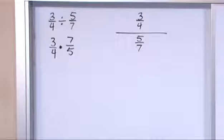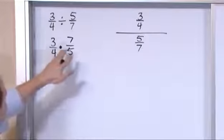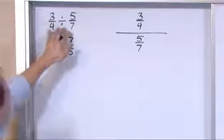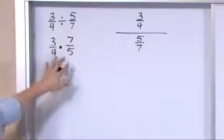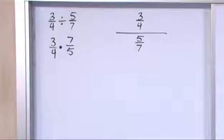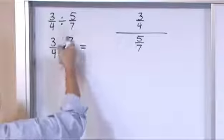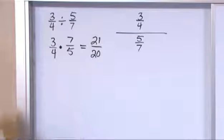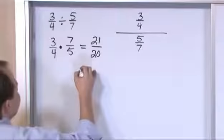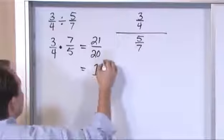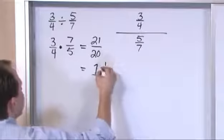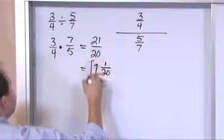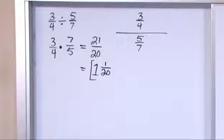Every single division problem that you do in fractions is going to turn itself into a multiplication problem. And so now that you know how to do this, the rest is easy. So all you do is proceed as usual. 7 times 3 is 21, over 4 times 5 is 20. Now this is the answer, but this is an improper fraction, so 20 can go into this one time with one left over. We write it as a remainder of 20, so we have 1 and 1 twentieths.